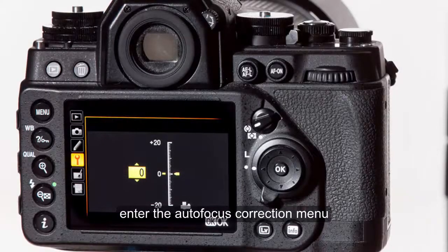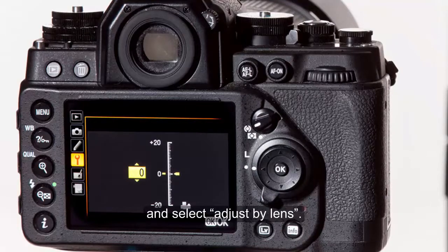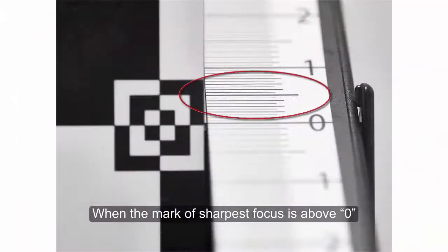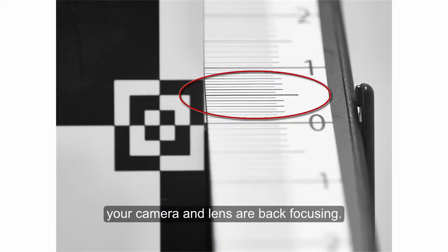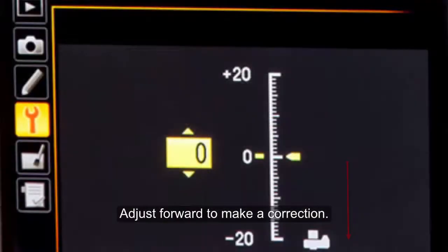If the sharp focused mark is not zero, enter the autofocus correction menu and select adjust by lens. When the mark of sharpest focus is above zero, your camera and lens are back focusing. Adjust forward to make a correction.